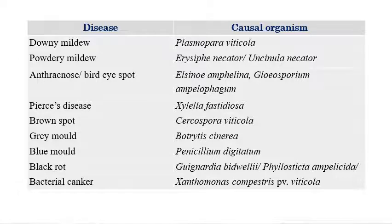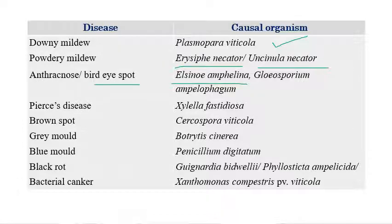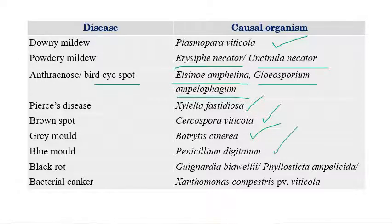The first one is grape downy mildew, caused by Plasmopara viticola. Powdery mildew, previously called Uncinula necator, is now called Erysiphe necator. Anthracnose or bud eye spot is caused by Elsinoe ampelina or Gloeosporium ampelophagum. Pierce's disease: Xylella fastidiosa. Brown spot: Cercospora viticola. Grey mold: Botrytis cinerea. Blue mold: Penicillium digitatum. Black rot: Guignardia bidwellii or Phyllosticta ampelicida. Bacterial canker: Xanthomonas campestris pathovar viticola.